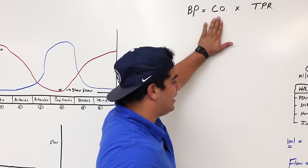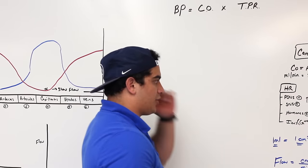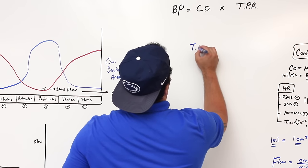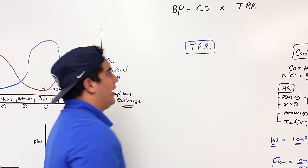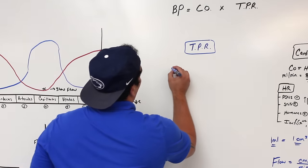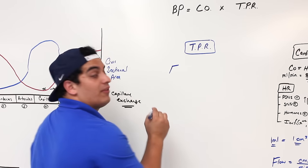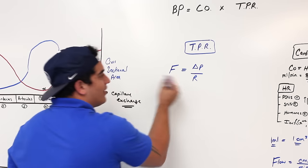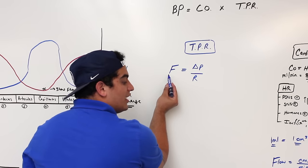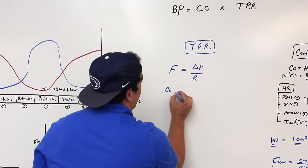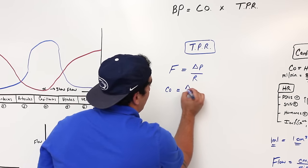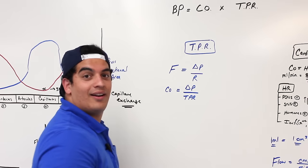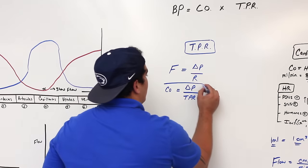We've talked about cardiac output in good detail — heart rate, stroke volume, flow, velocity, and cross sectional area. Now let's move into total peripheral resistance. One way to express it: flow equals the change in pressure over resistance. Since flow equals cardiac output, we can say cardiac output equals blood pressure divided by total peripheral resistance.